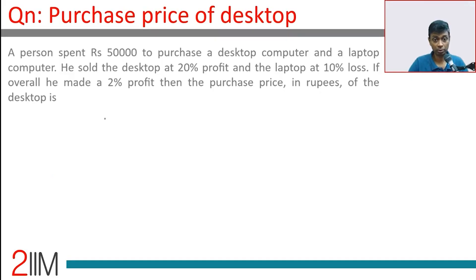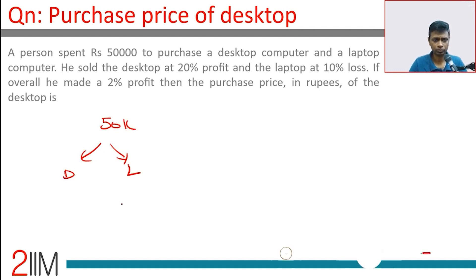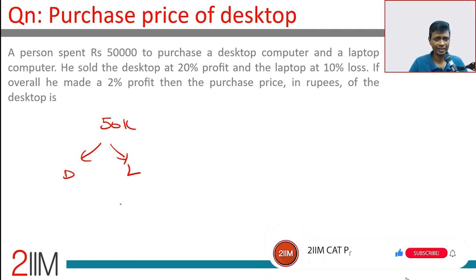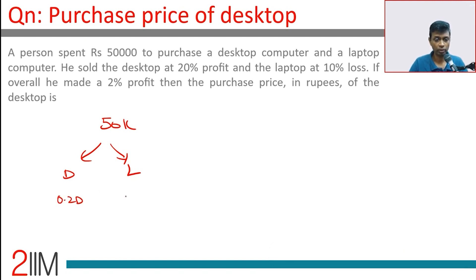A person spent 50,000 to purchase a desktop computer and a laptop computer. He sold the desktop at a 20% profit and the laptop at a 20% loss — that gives us 0.2d minus 0.1l.